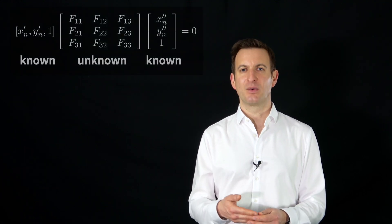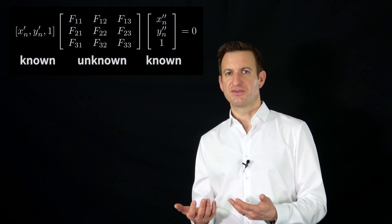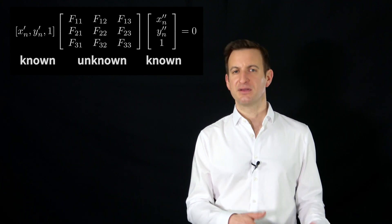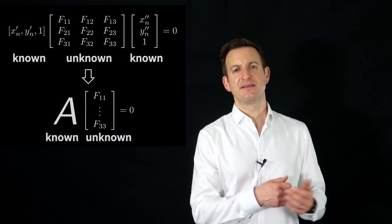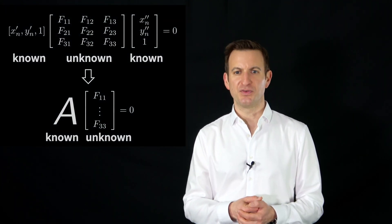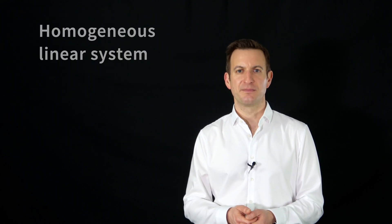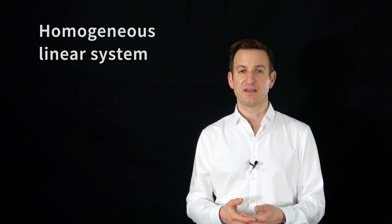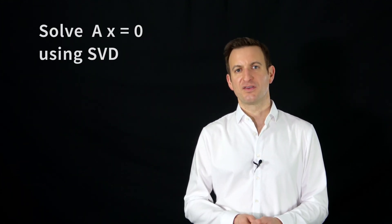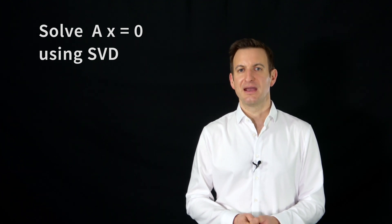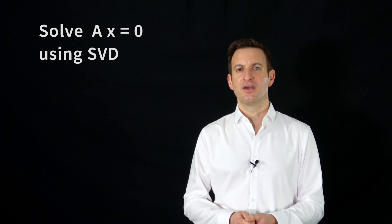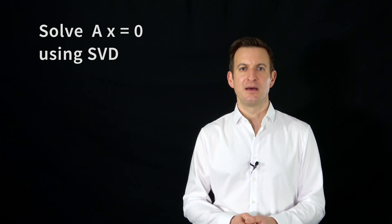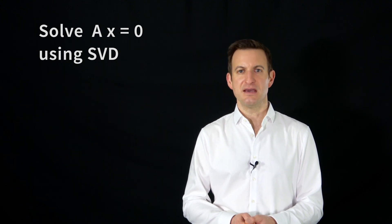It's quite easy to think about this. We have an equation which consists of some parameters that are known and some that are unknown, and they should equal zero — so it's a homogeneous equation. This is something we can solve, typically with the singular value decomposition, and this allows us to estimate the individual parameters of E and F — the individual entries of these 3x3 matrices.